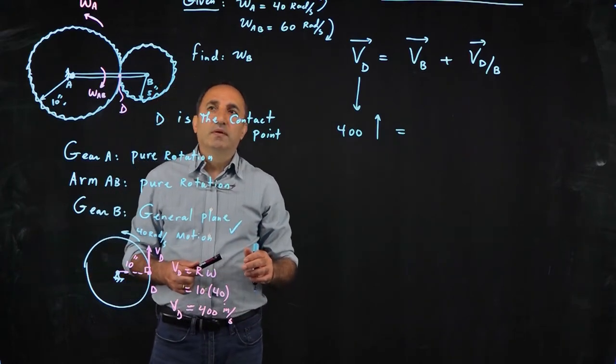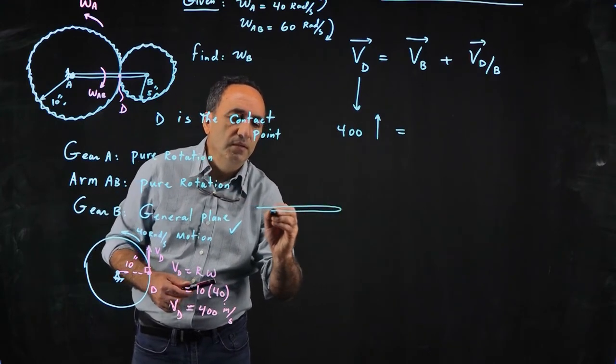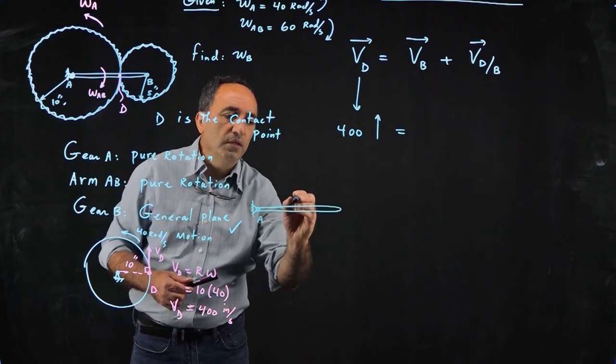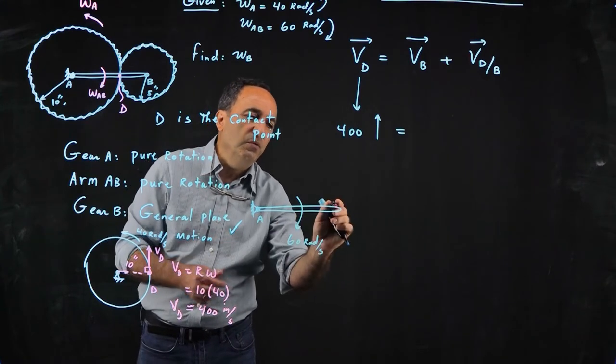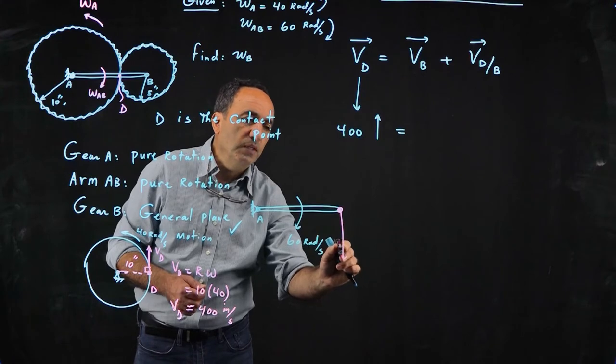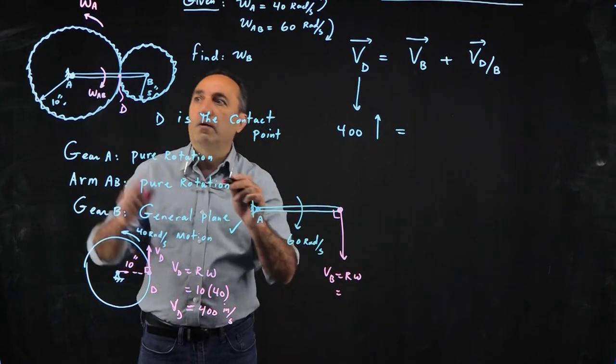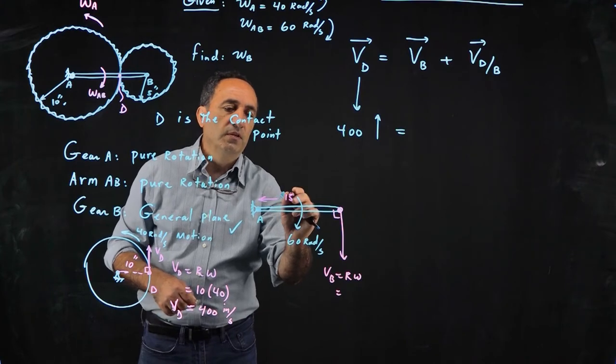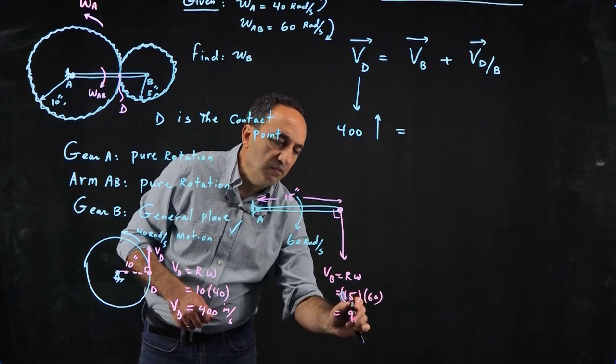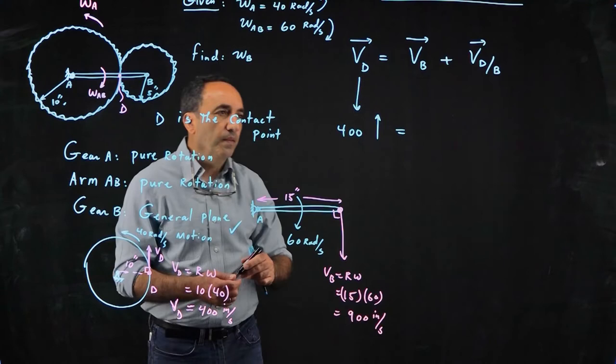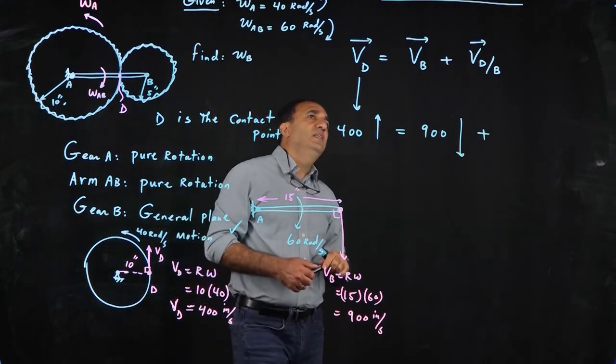The approach I'm using is the scalar approach. I put the magnitude and the direction right next to it. What about velocity of B? Look at arm AB. Arm AB is also rotating about A, but it's rotating the other way at an angular speed of 60 radians per second. Therefore, velocity of B, which happens to be also the center of gear B, must be downward, pure rotation. So velocity is R omega. R is 10 and 5, 15 inches is the length of this bar or arm. So 15 times 60, that's 900 inches per second going down.